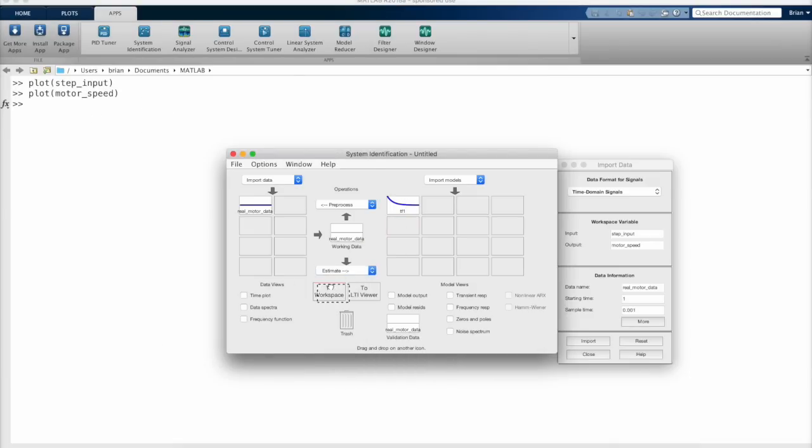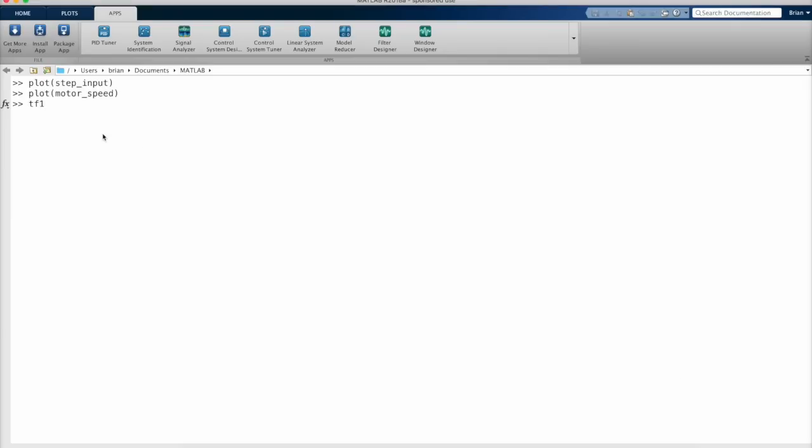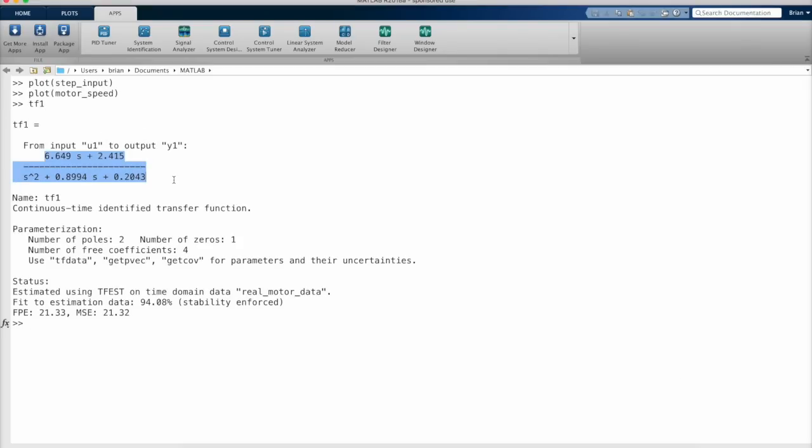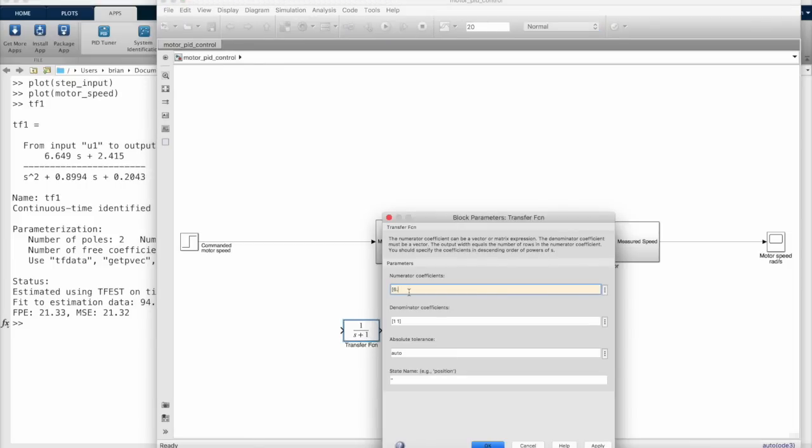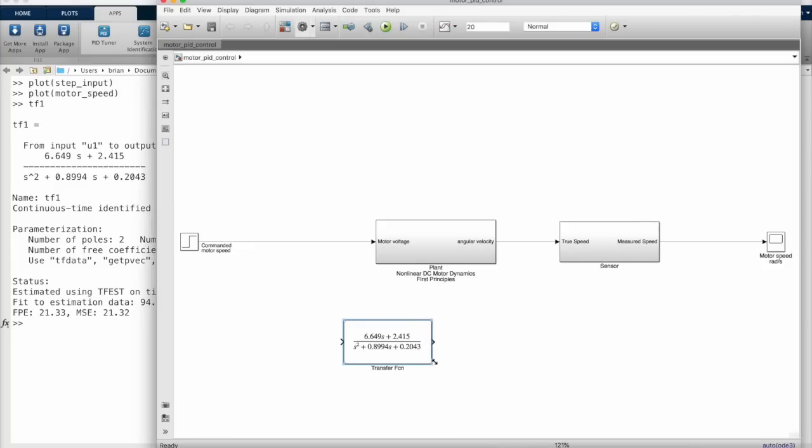From my input and output data, the system identification app came back with a second order transfer function, about 6.6s plus 2.4 divided by s squared plus 0.9s plus 0.2. And now we can go back to Simulink and put our new identified linear model to the test. I'll add a transfer function block and write out the numerator and denominator explicitly.